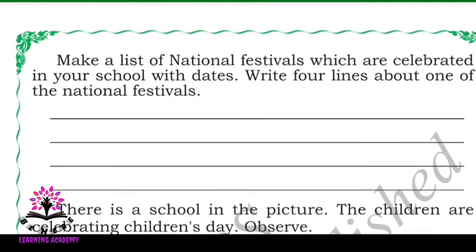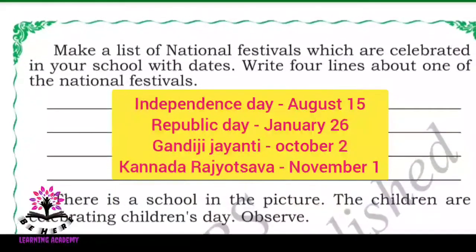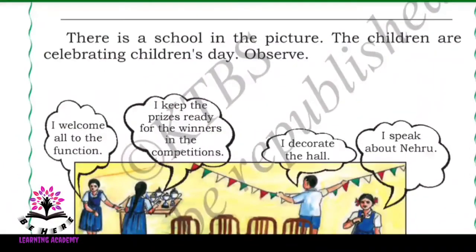Make a list of national festivals which are celebrated in your school with dates, and write four lines about one of the national festivals. Various national festivals celebrated in school are: Independence Day on August 15th, Republic Day on January 26th, Gandhi Jayanti on October 2nd, and Kannada Rajyotsava on November 1st.